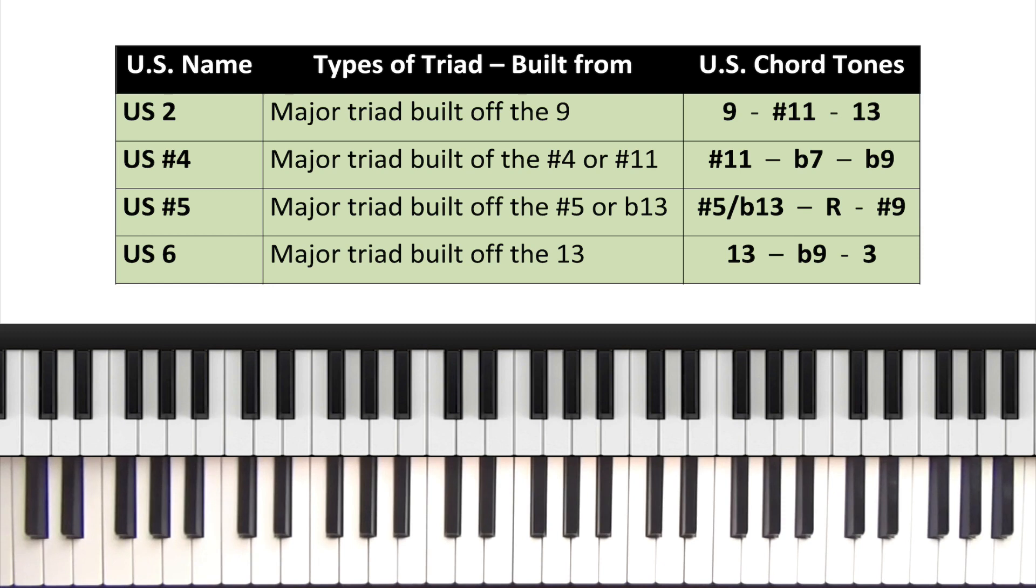Whenever we come across a dominant chord in a jazz standard, if one of these tones is the melody note, we can apply an upper structure voicing to achieve interesting harmonic colors and textures. Once we have these four formulas memorized, we can always find an interesting voicing that works well with both the melody and the underlying harmony.